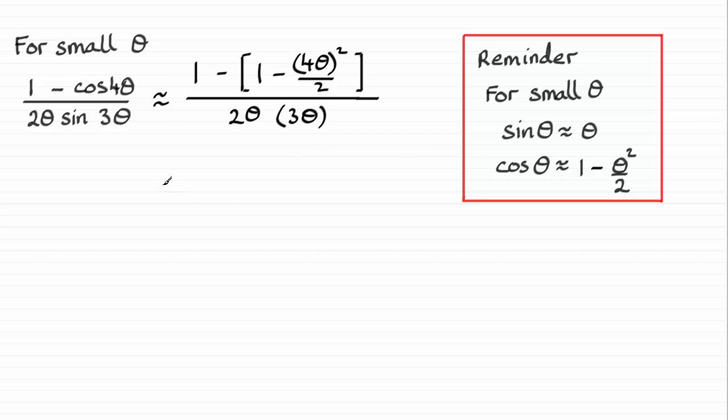So it's just a question of simplifying this. We've got 1 minus 1 so that goes out, and we've got minus minus there so that's a plus. So 4 theta squared is 16 theta squared divided by 2, giving us 8 theta squared on the top.